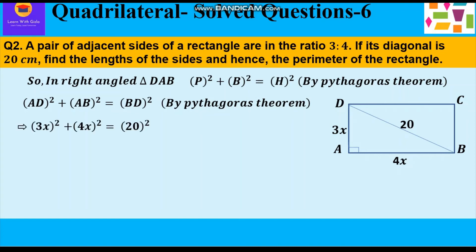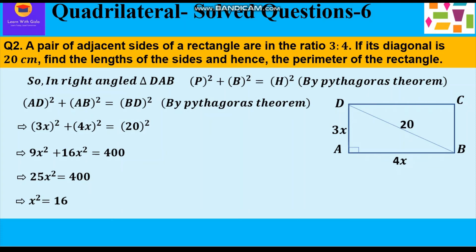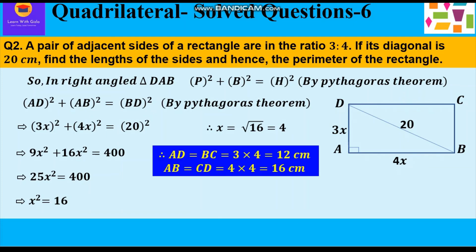Let AD = 3x and AB = 4x, and BD = 20 cm. Writing accordingly: (3x)² + (4x)² = 20². So 9x² + 16x² = 400, giving 25x² = 400, and x² = 400/25 = 16. Therefore x = √16 = 4.